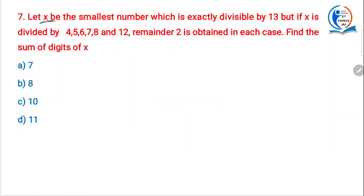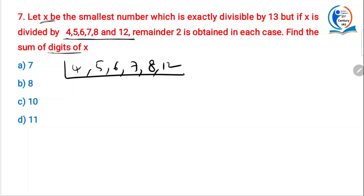Let x be the smallest number which is exactly divisible by 13, but if x is divided by 4, 5, 6, 7, 8 and 12, remainder 2 is obtained in each case. Find the sum of the digits of x. Same pattern but with a small difference. First, the LCM of 4, 5, 6, 7, 8 and 12. Why LCM? Because it must be divisible by all of them and it should be the smallest such number.